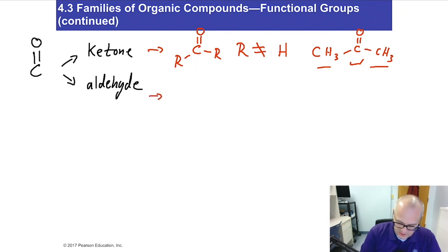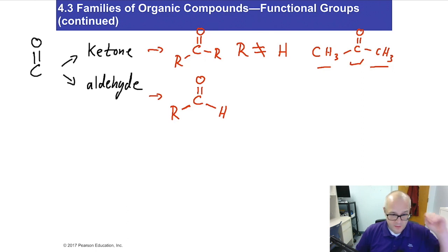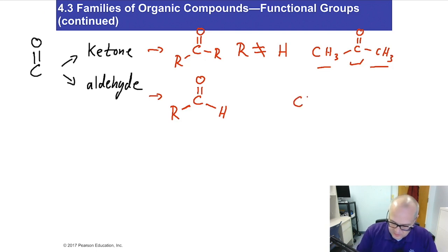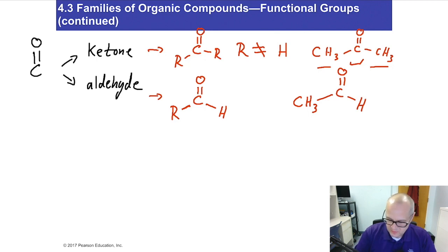Aldehyde. What makes an aldehyde special is the hydrogen that must be bonded to the carbonyl carbon. In an aldehyde, the R group could be another hydrogen — that would be formaldehyde — but it doesn't have to be; it can be a carbon-based group too. Here's an example of an aldehyde. Notice the difference between ketones and aldehydes: aldehydes have an H directly bonded to the carbonyl carbon. That's how you tell them apart.